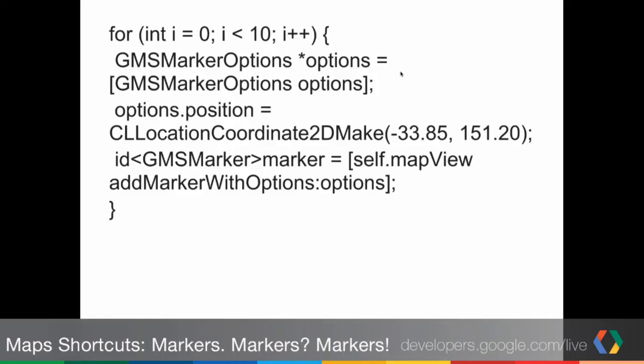In version 1.1, when you had a map and wanted to add a marker, you added the marker from the map object. In older versions, 1.1 and before, you would create a GMS marker options object and a CL location coordinate object. Then with map view, you would call add marker with options and give it the options object. We don't do that anymore.